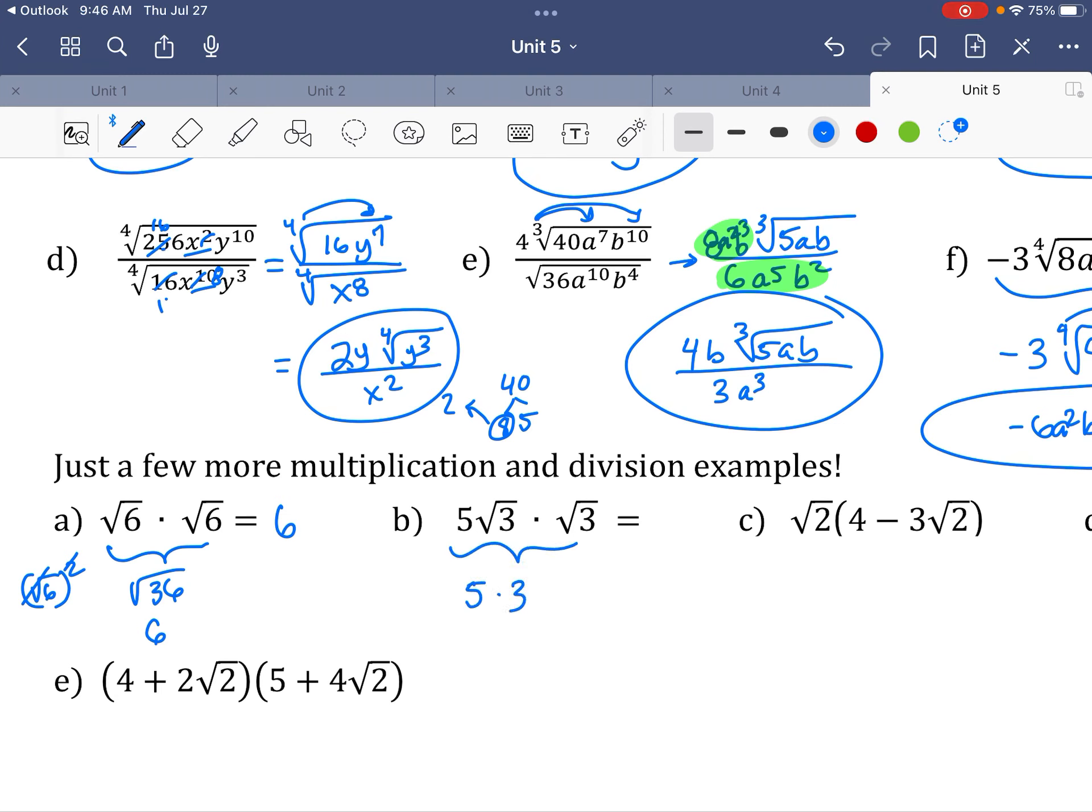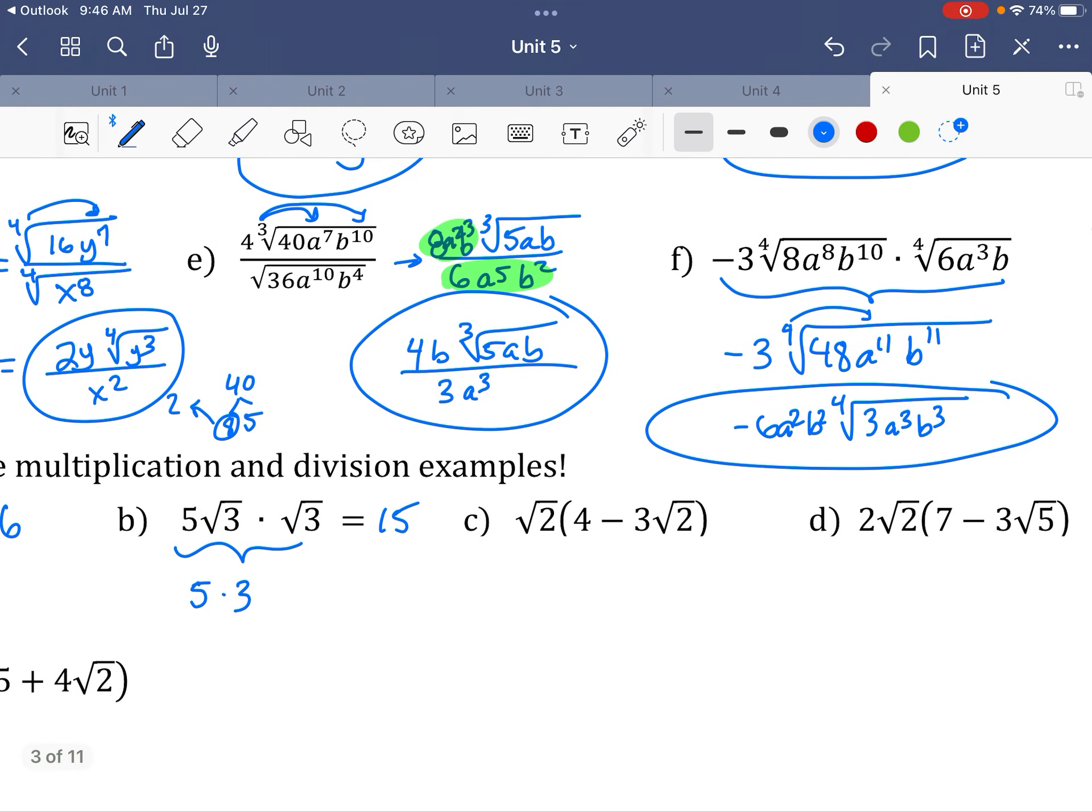So when I see this problem right here, I'm like, oh, that 5 stays, but 3 pops out. So 5 times 3 is 15. And it'll just be a lot faster for you in the long run.